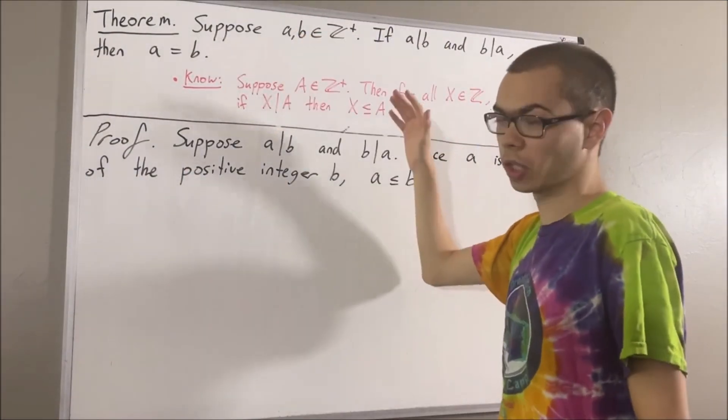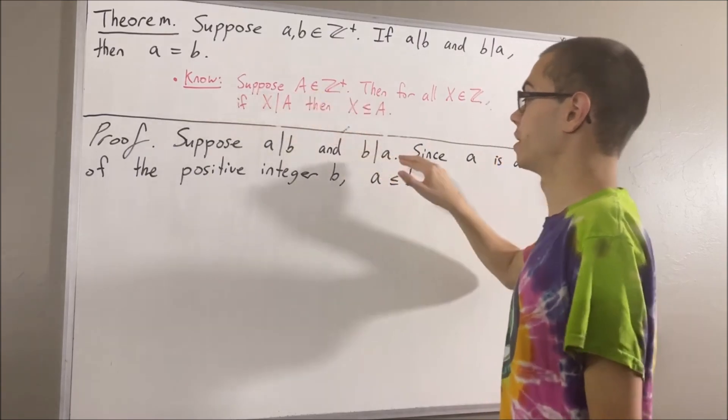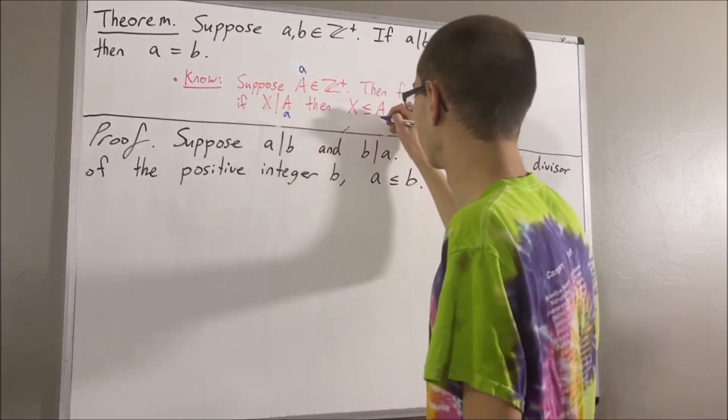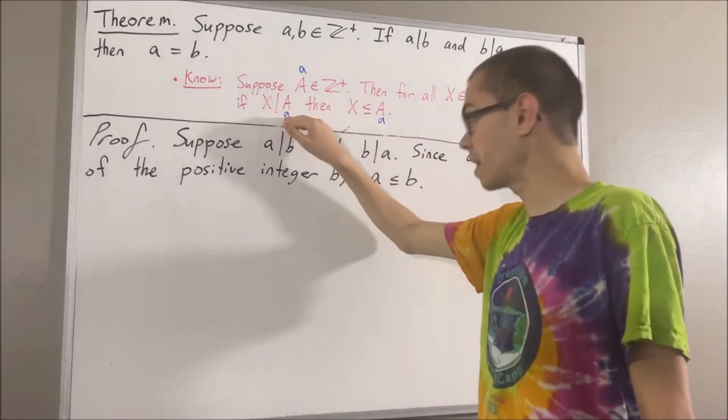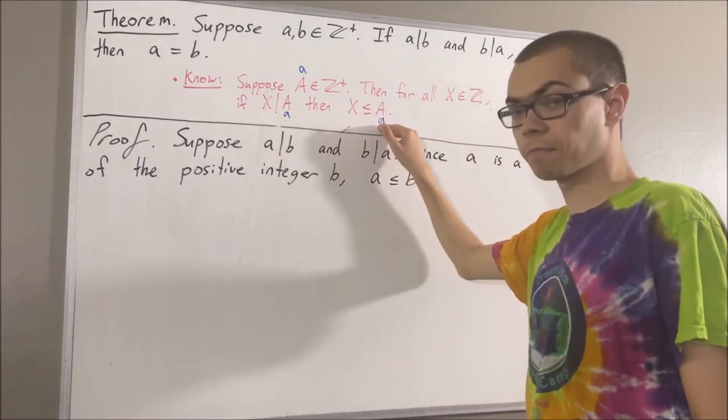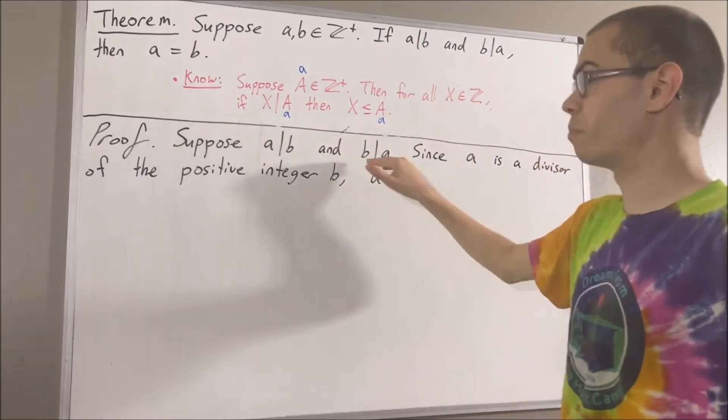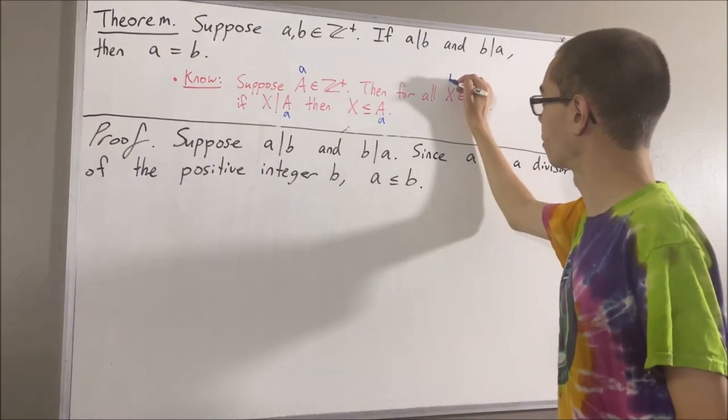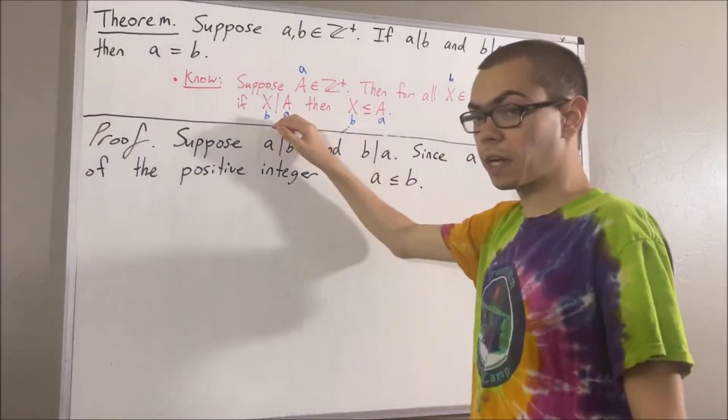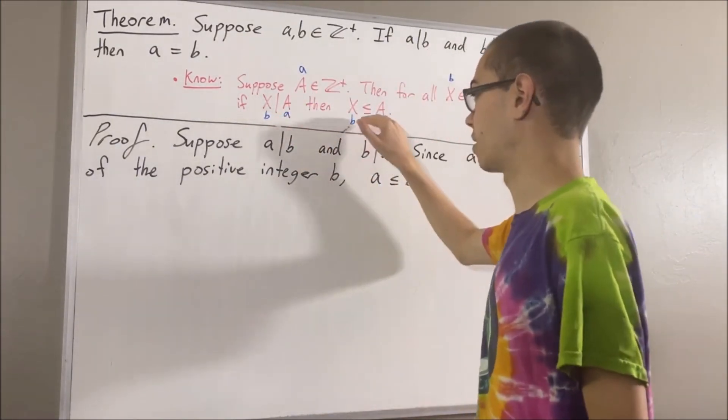And now, performing a similar argument, let's take capital A to be A. Well then, we know that for all integers x, if x divides A, then x is less than or equal to A. Well in particular, we know that B divides A, so let's take x to be B. Since B divides A, we know that B is less than or equal to A.